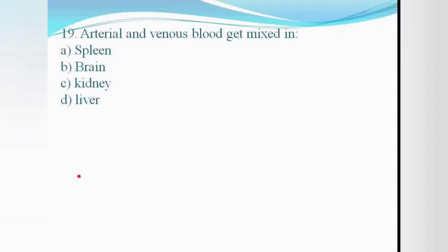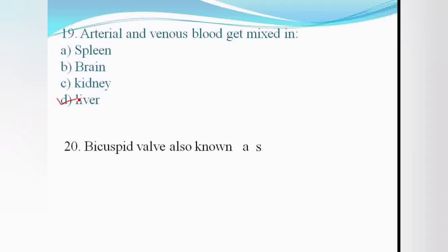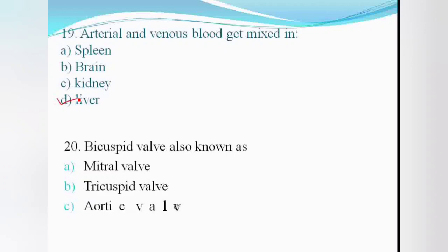Arterial and venous blood get mixed in: the heart, burn, kidney, or liver? The valve is known as the valve of the heart.